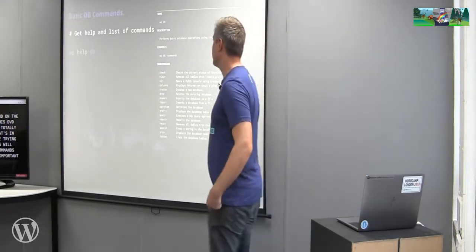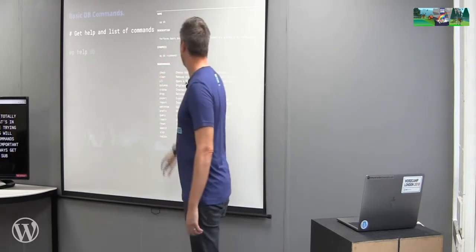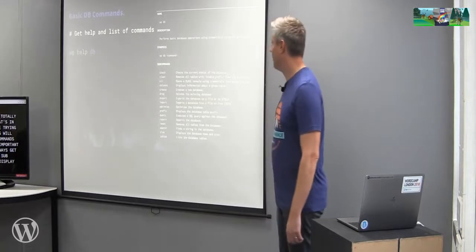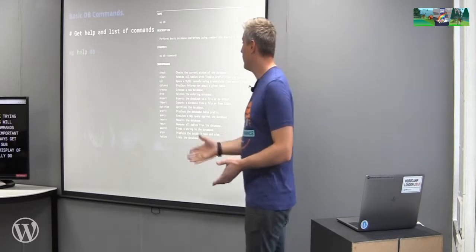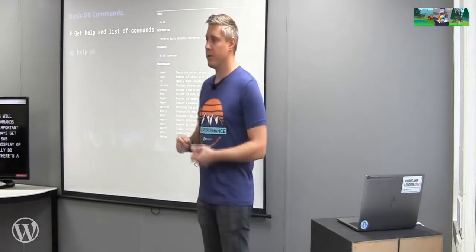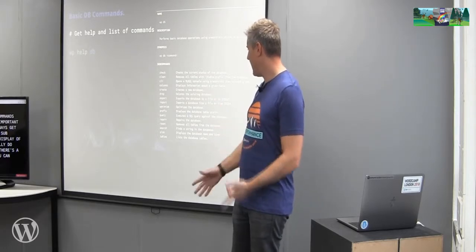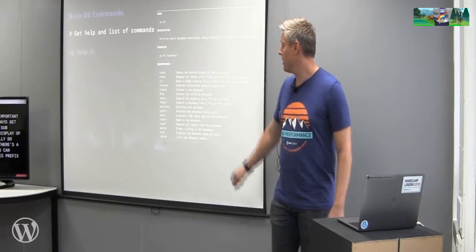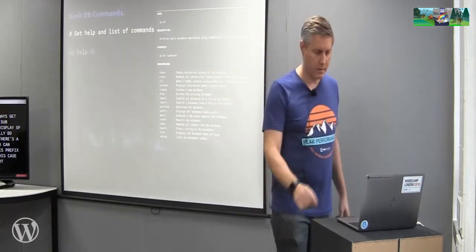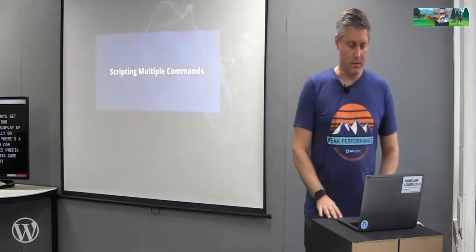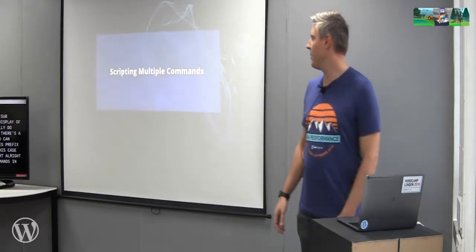Since the problem we're trying to solve involves database commands, we'll talk about a couple of them. One really important thing is that you can always get help — the help command takes a subcommand and gives you a nice display of all the things you can do with that WP CLI command. For 'db' there are useful things like optimize, look at table prefixes, and run repairs. In this case we're going to look at export and import.